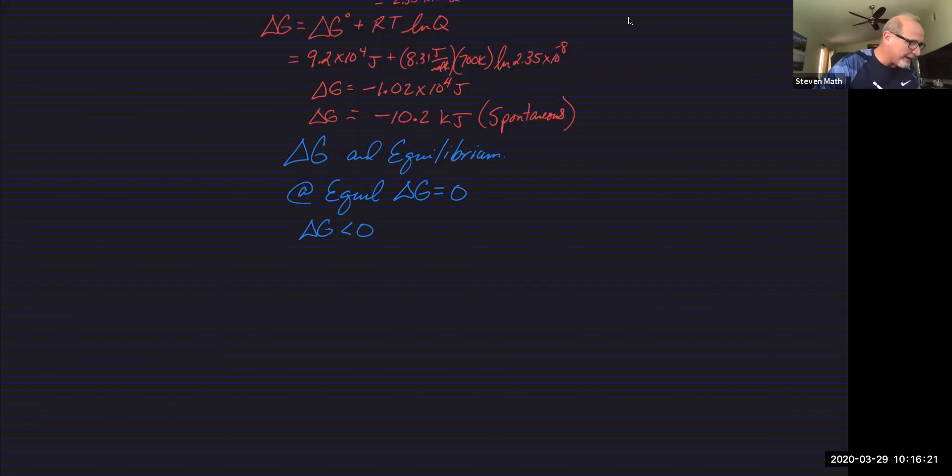then that means that delta G of the reactants was bigger than delta G of the product. And this is going to shift to the right. It's going to proceed in the forward direction. And that's what we just had. We just had a delta G that was negative 10 kilojoules. So what does that mean? It's spontaneous. This reaction is going to proceed towards the products that were not at equilibrium yet.